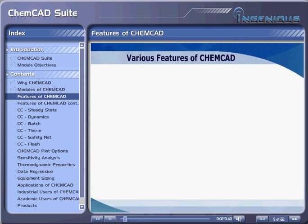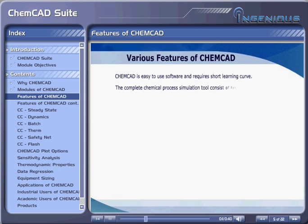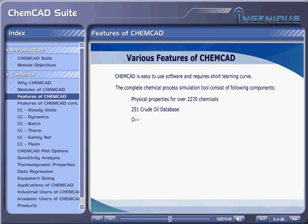Various features of ChemCAD. ChemCAD is easy-to-use software and requires a short learning curve. The complete chemical process simulation tool consists of the following components: physical properties for over 2,270 chemicals, 251 crude oil database, over 39 thermodynamic options, and over 55 unit operations.